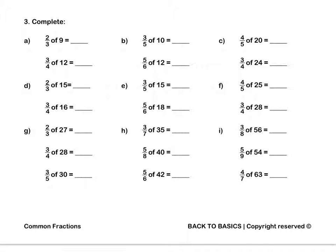Question 3. Two thirds of 9: 9 divided by 3 is 3, and 3 times 2 is 6. Three fifths of 10: 10 divided by 5 is 2, and 2 times 3 is 6.